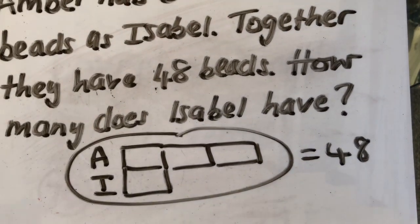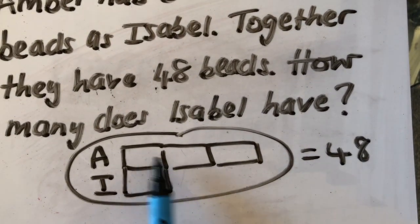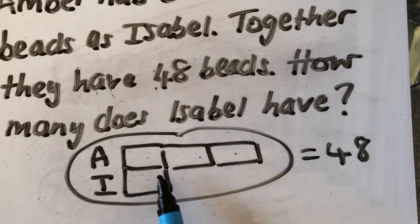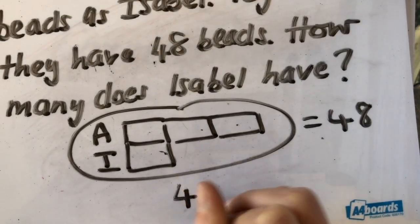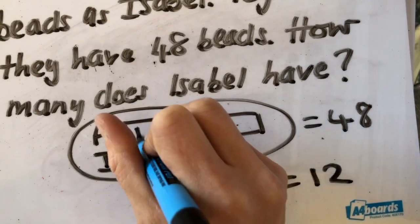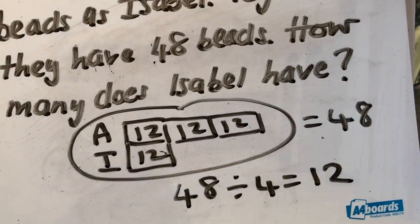Now this is a question which can so easily go wrong because you instantly divide by 3. What you'll see by drawing the bar out is actually you have got 4 parts. 1, 2, 3, 4 make up your whole of 48. So I've actually got to do 48 divided by 4, which gives me 12. Therefore, each of these must be 12. Therefore, Isabel has 12 beads.